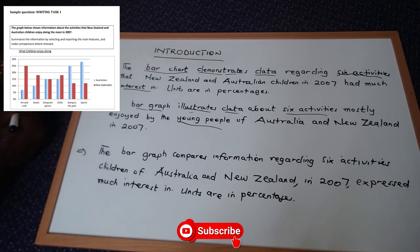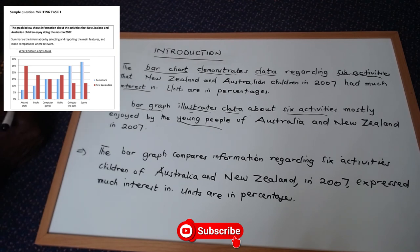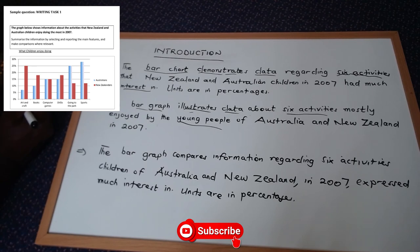There are different ways and versions of the introduction. First, know the type of graph or diagram — bar chart, line graph, or whatever — and specify it. Second, ask yourself how many activities or items are being discussed and include that number. Third, underline the words you can replace with synonyms. Bear in mind that you should paraphrase about 60 percent of the words. Build your vocabulary bank so you can write faster and don't have to spend time thinking about synonyms.